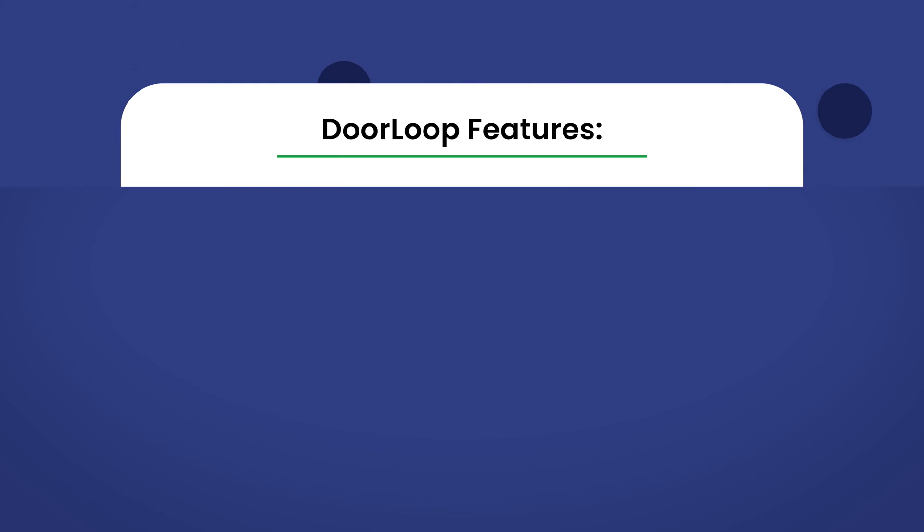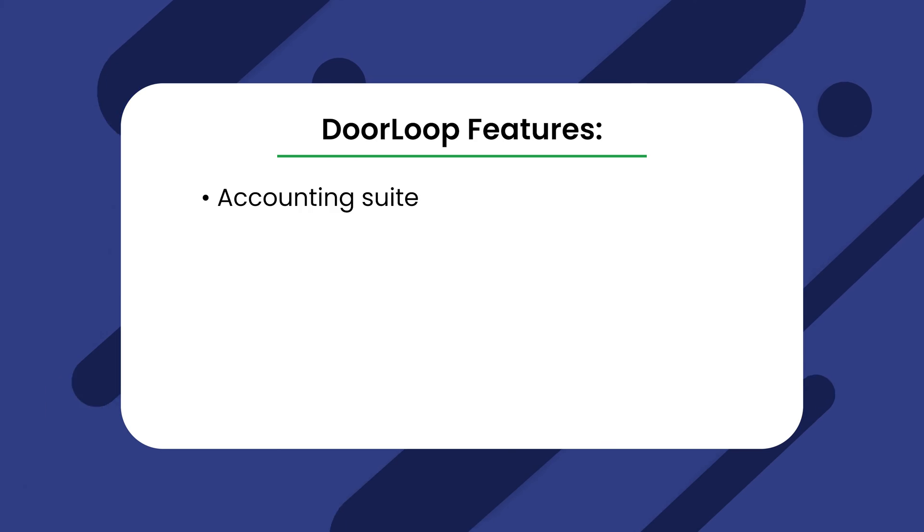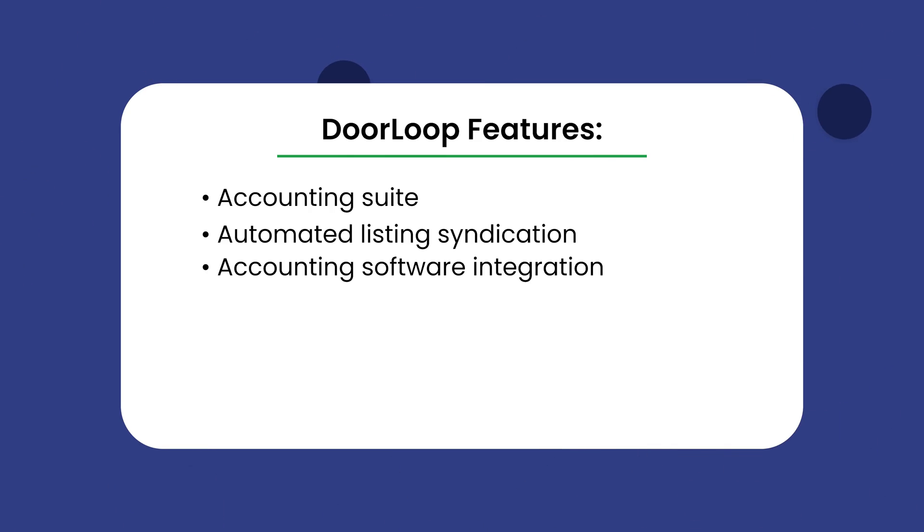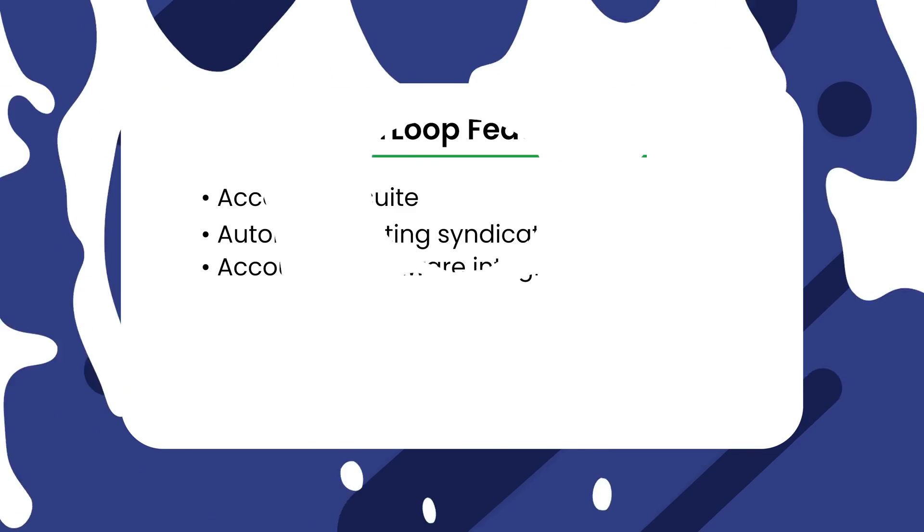Doorloop features. Accounting suite: run custom reports, track all your cash flow, and make data-driven decisions with accounting features that are as robust as they are easy to use. Automated listing syndication: get seen on Zillow and other listing platforms to fill those vacancies. Accounting software integration: do everything you ever wanted with the power of integrations, sharing data between programs like QuickBooks.